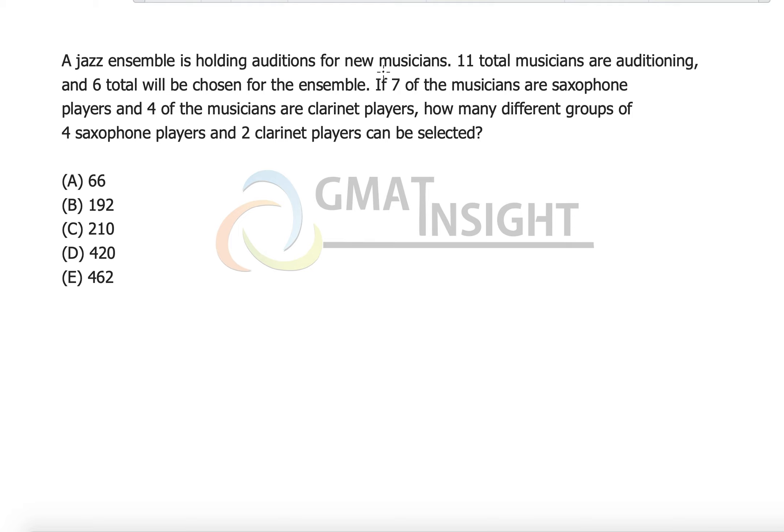A jazz ensemble is holding auditions for new musicians. Eleven total musicians are auditioning and six total will be chosen for the ensemble. Seven of the musicians are saxophone players, which means the remaining four are clarinet players.